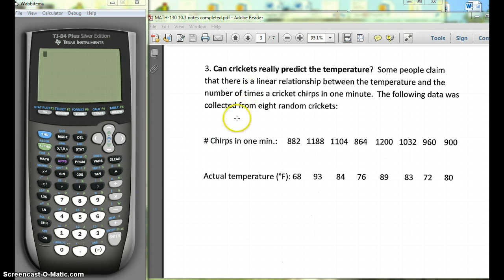So we have this problem from the section 10.3 notes that says can crickets really predict the temperature? Some people claim that there's a linear relationship between the temperature and the number of times a cricket chirps in one minute. The following data was collected from eight random crickets. We have how many times these crickets were chirping per minute and the temperature outside.